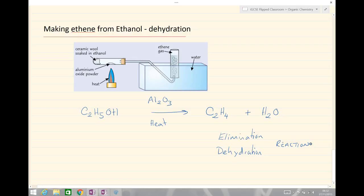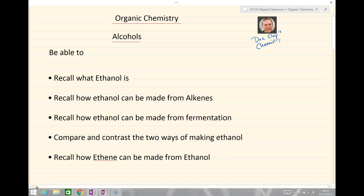And that brings us to the end of our lesson on ethanol. Just to recap then, you should now be able to recall what ethanol is, recall how ethanol can be made from alkenes, recall how ethanol can be made from fermentation, compare and contrast two ways of making ethanol, and recall how ethene can be made from ethanol.